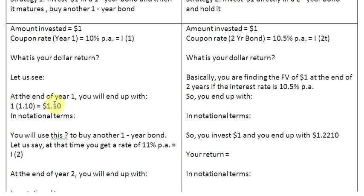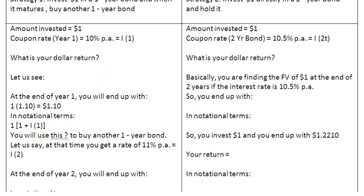That leaves us with one dollar and 10 cents at the end of year one, which we can represent in notational terms. For this one dollar we write a 1, and then inside the bracket that is 1.10, so we write one plus the interest rate i1, giving us 1*(1+i1). So we have one dollar and 10 cents at the end of year one.